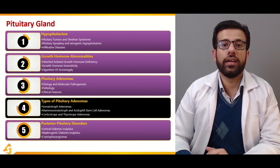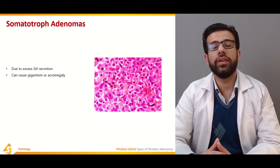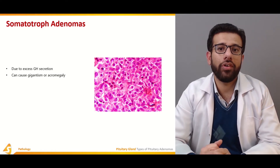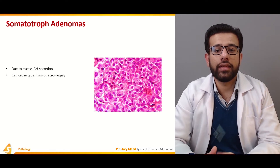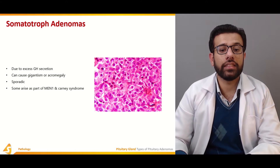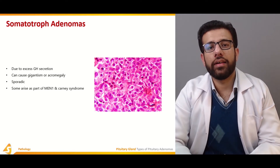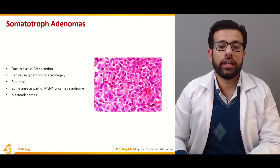The somatotroph adenomas arise from somatotroph cells, which release growth hormone. Excess growth hormone can cause gigantism or acromegaly, as discussed in prior sections. These adenomas can also arise as part of MEN1 syndrome or Carney syndrome, and other associated causes include pheochromocytoma.